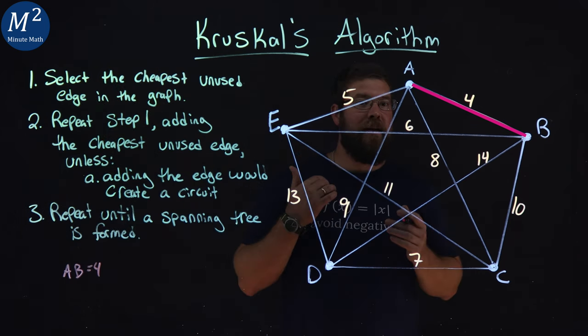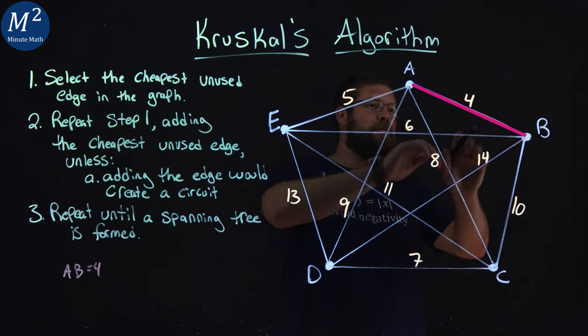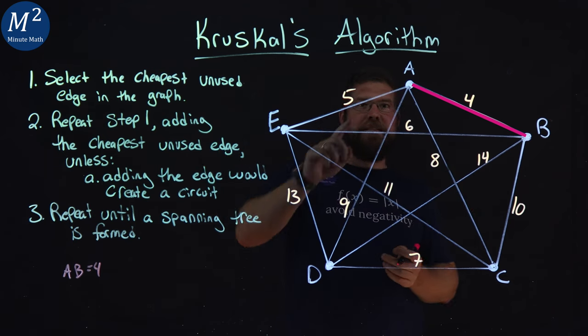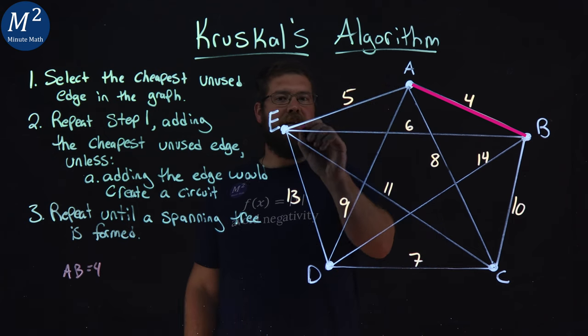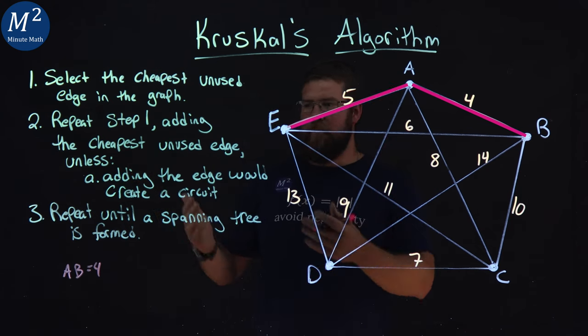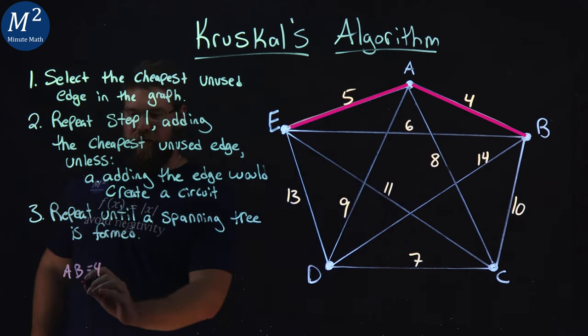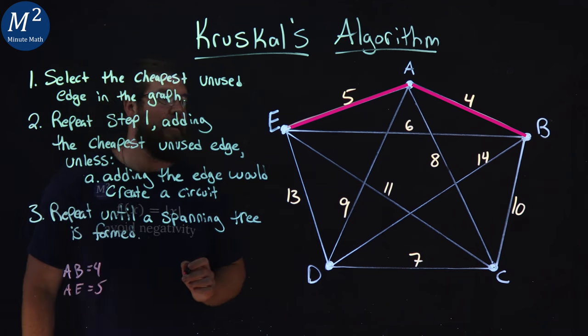Then let's repeat. Let's find the next cheapest unused edge. We've already used this one, A, B. Next one I see is a five right here. E to A. Select that. Doesn't create a circuit. We're good. E to A or A to E, and that is a five.